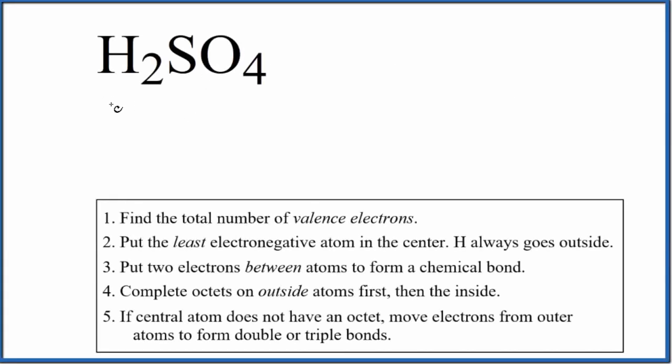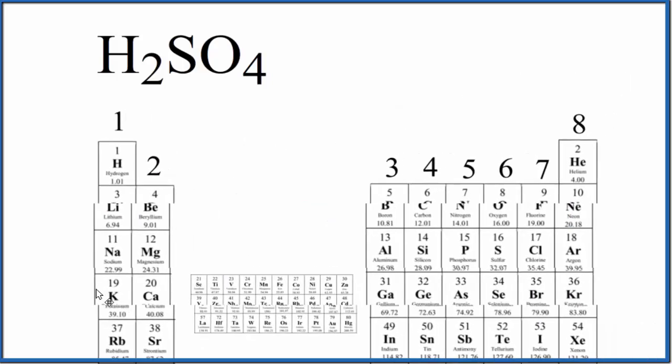Let's draw the Lewis structure for H2SO4. This is sulfuric acid. The first thing we do with Lewis structures, we count up the total number of valence electrons, and we'll use the periodic table to help us do that.